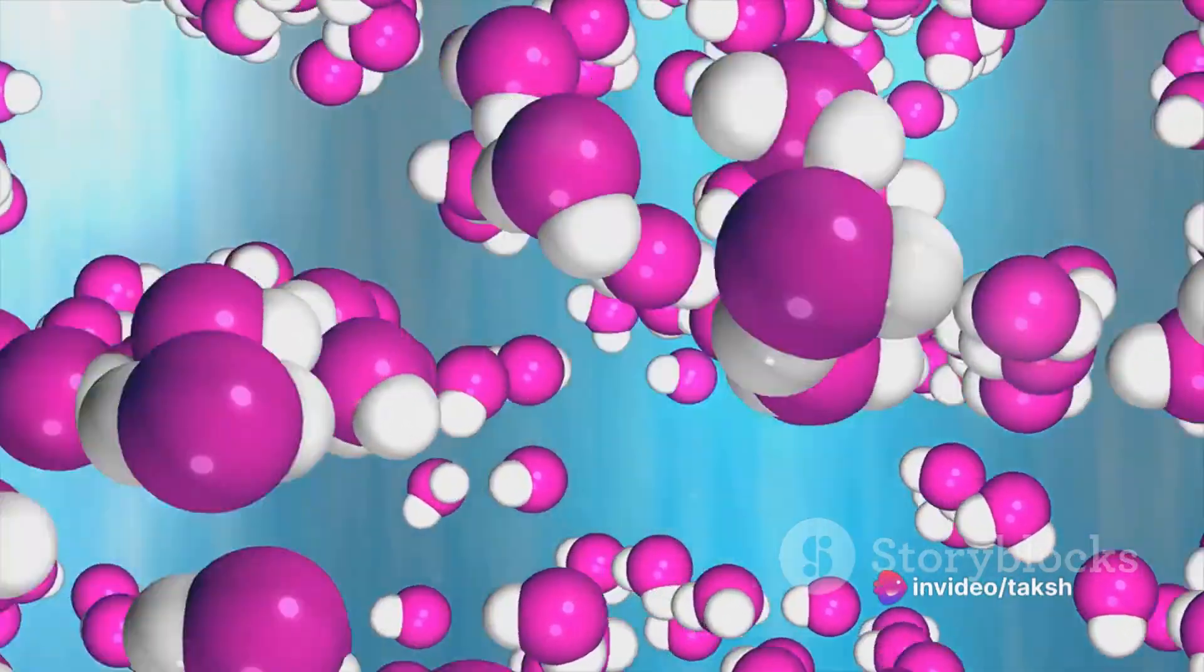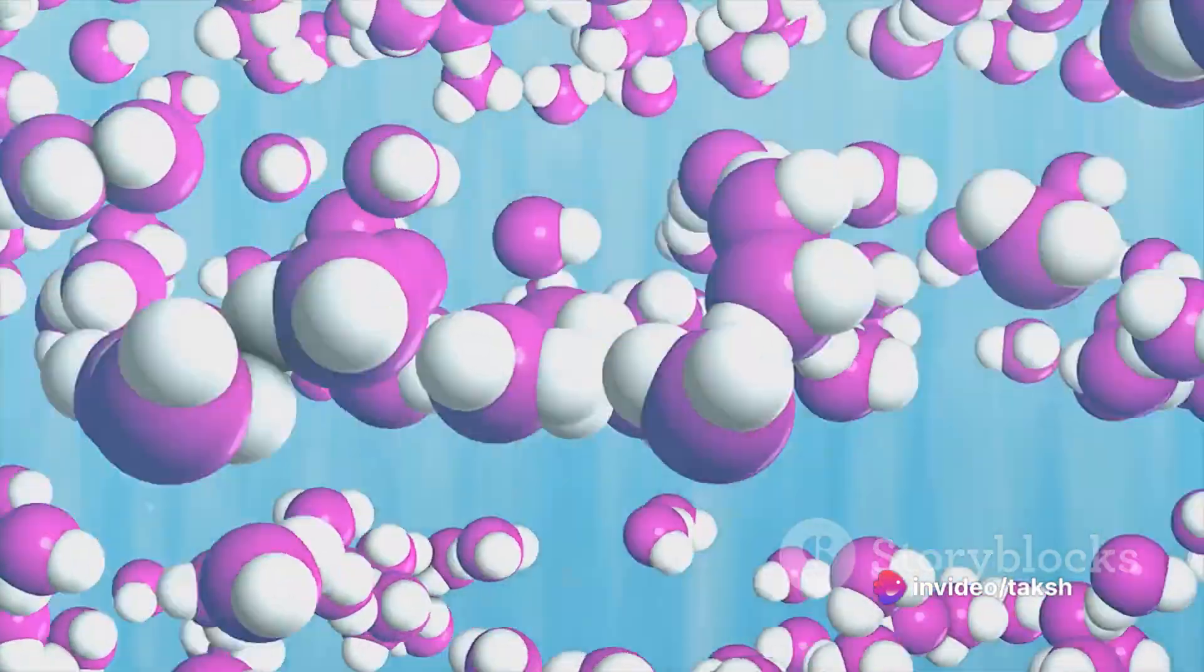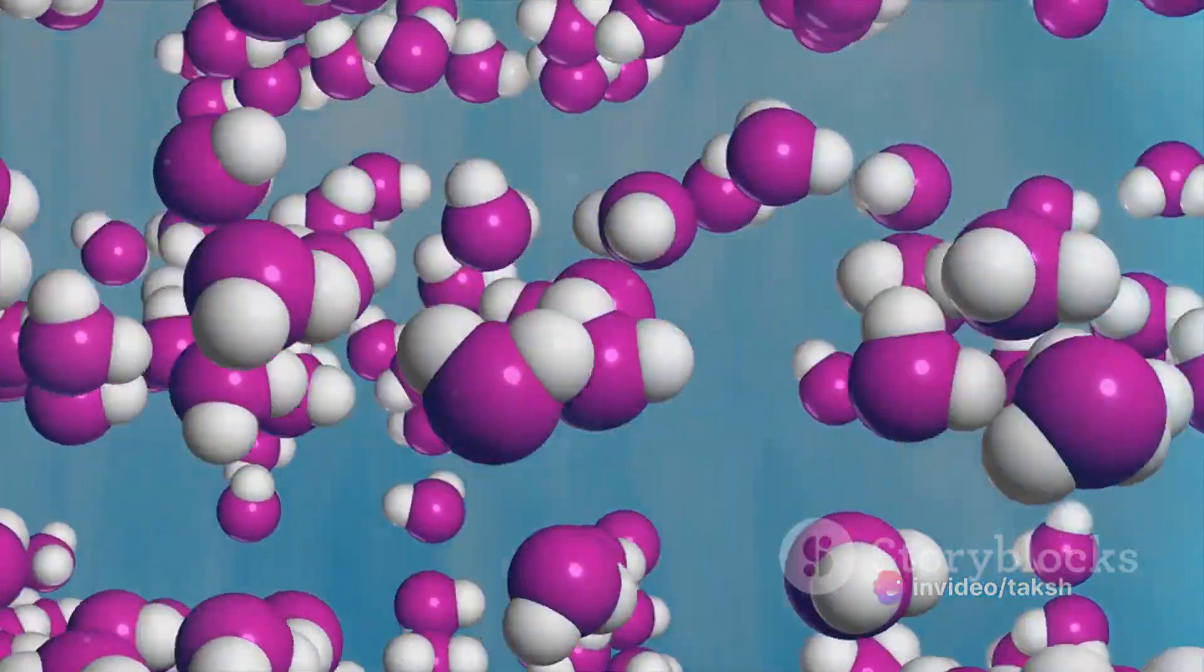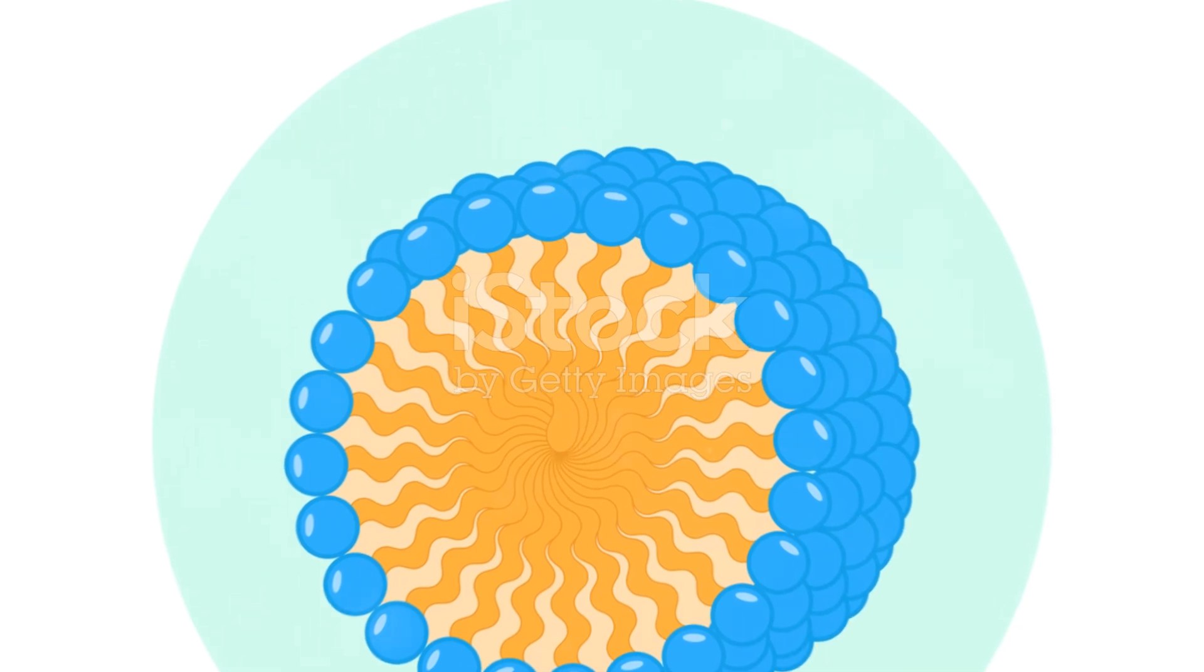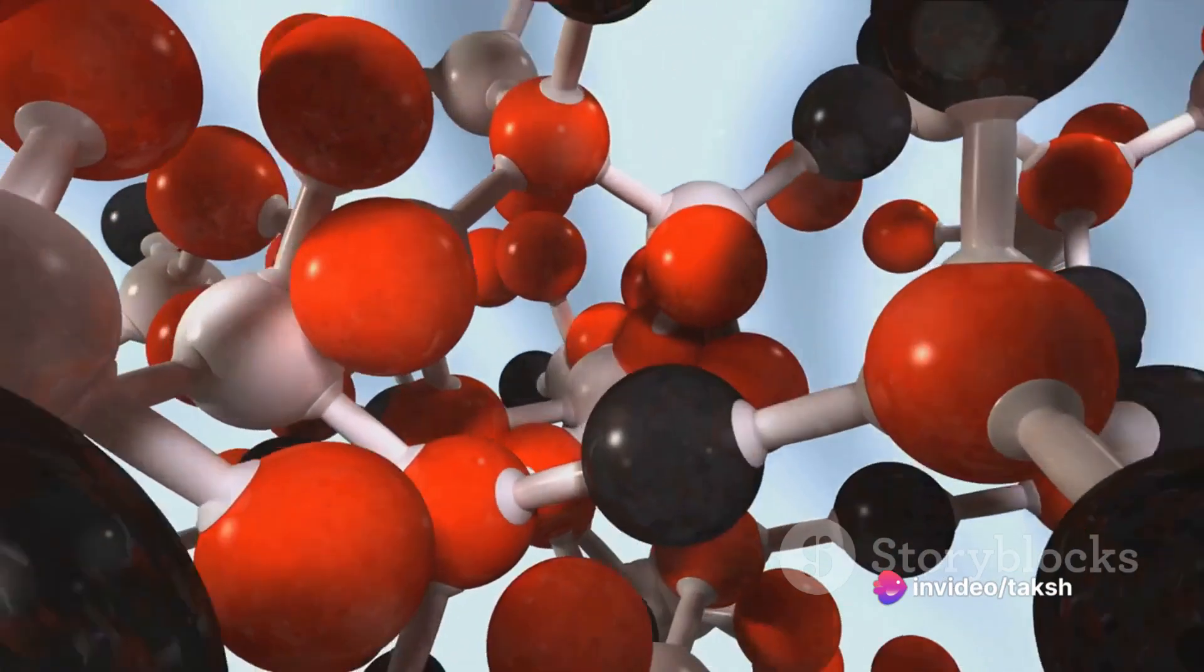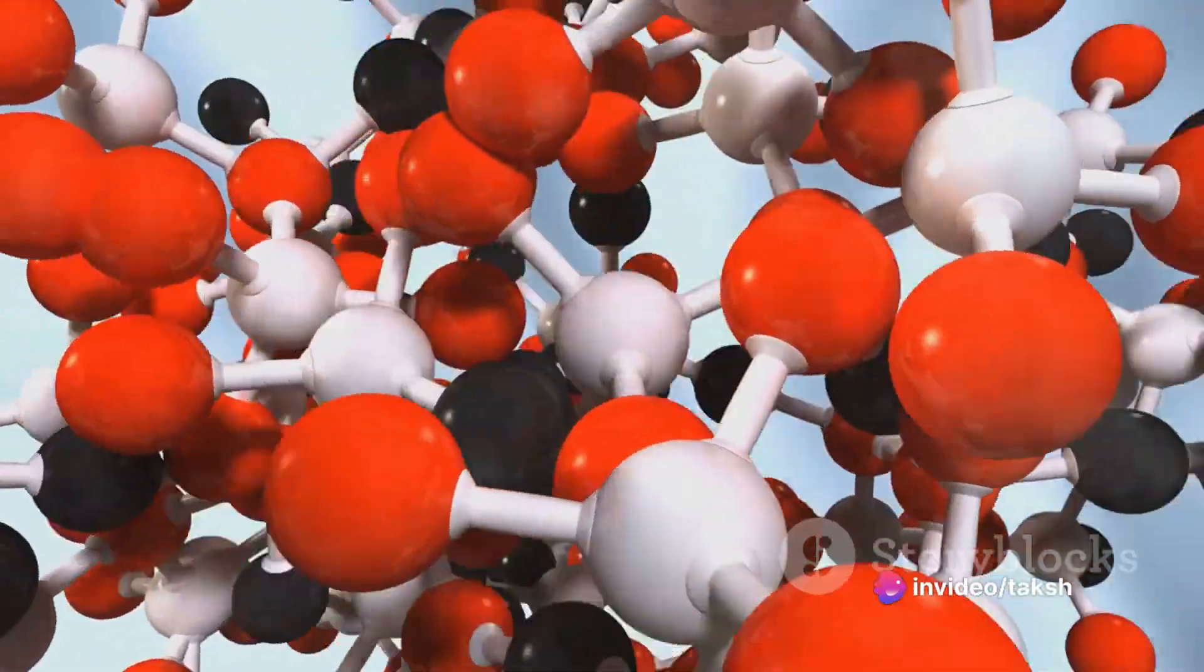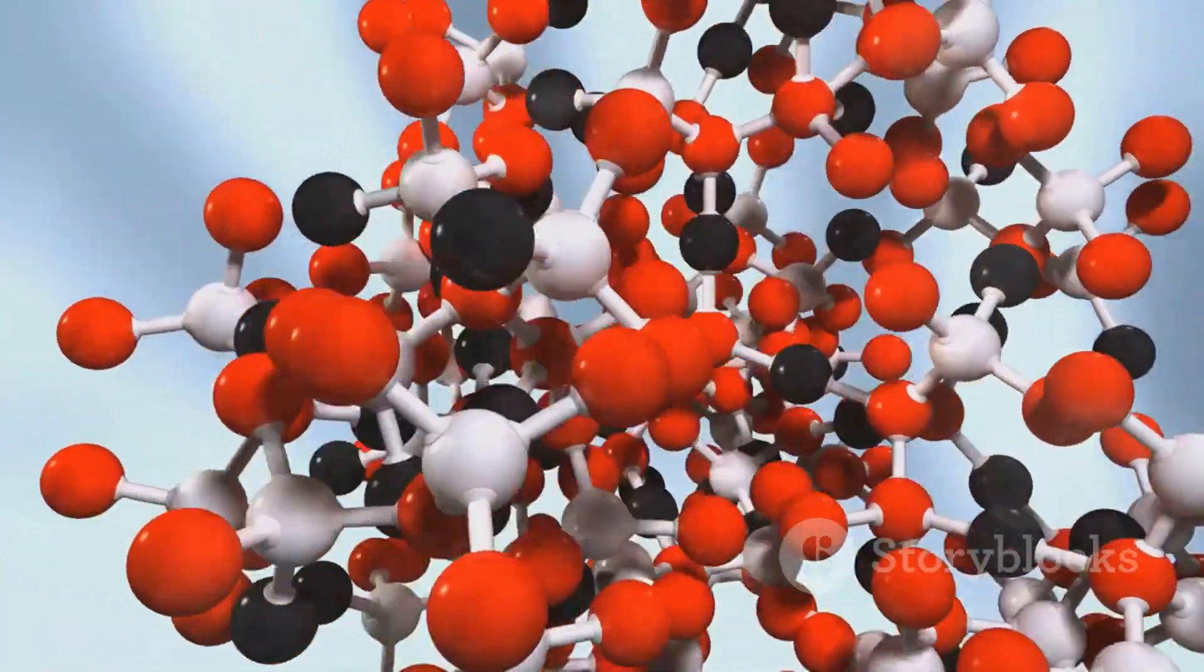Soaps and detergents are everyday items that owe their cleaning power to chemistry, specifically the chemistry of micelles. But what's happening at a molecular level when we use these cleaning agents? Soaps and detergents belong to a category of compounds known as surfactants. These compounds have a unique structure. One end is hydrophilic or water-loving, while the other end is hydrophobic or water-avoiding. When these surfactants encounter water and grease or dirt, something remarkable happens.